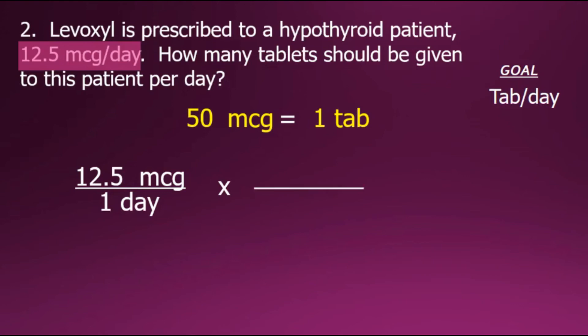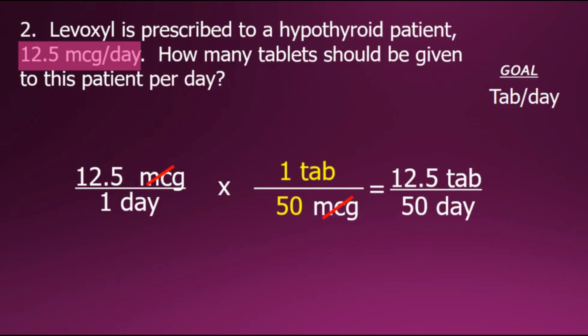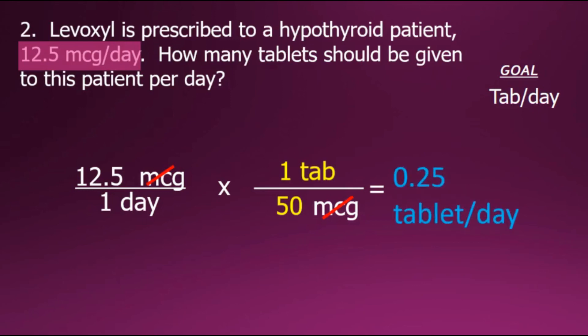Setting up our conversion fraction, we'll place the microgram value in the denominator with one tablet in the numerator, giving us a conversion fraction with a value of one. We can now cancel out the common factor of micrograms in the numerator and the denominator. Performing the multiplication of these fractions and simplifying by dividing numerator by denominator gives a final answer of 0.25 tablets per day, or one-fourth tablet per day.